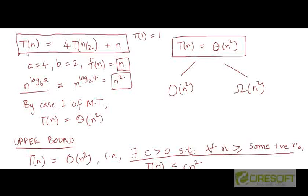We are going to do one more example of a recurrence that we will try to solve using the substitution method, where a straightforward approach won't lead to a successful proof and we may have to add or subtract a lower order term to push through the inductive proof. Here is the recurrence: T(n) = 4·T(n/2) + n, for n greater than 1, and T(1) = 1 as the base case.